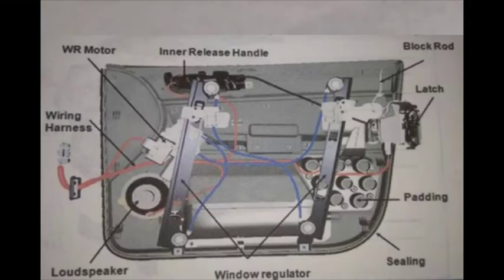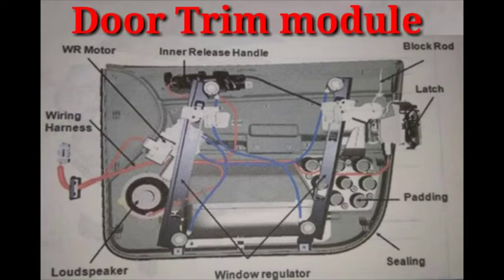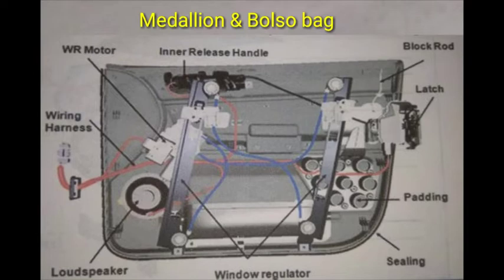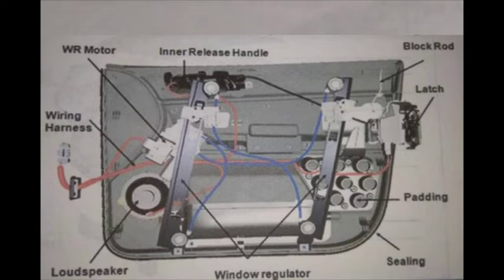Now we are going to see the door trim module. The door trim module is a single assembly fitted to the inner steel. It consists of a window regulator motor, window regulator, speaker, inner handle, latch, and wiring harness over the DTM. The medallion and the bolster bag will be attached separately by means of clips and welding respectively.